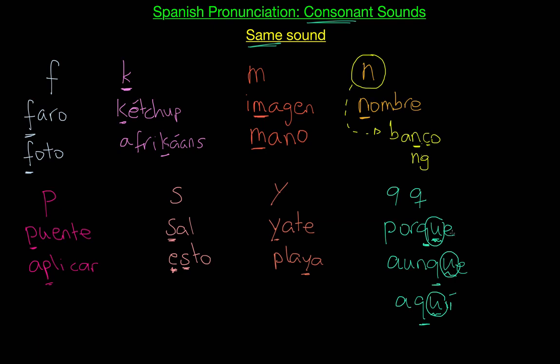PORQUE, which means, by the way, because. AUNQUE, which is however. AQUÍ, which is here. And this is it. These are the eight sounds which are the same in Spanish as in English. Thank you for listening.